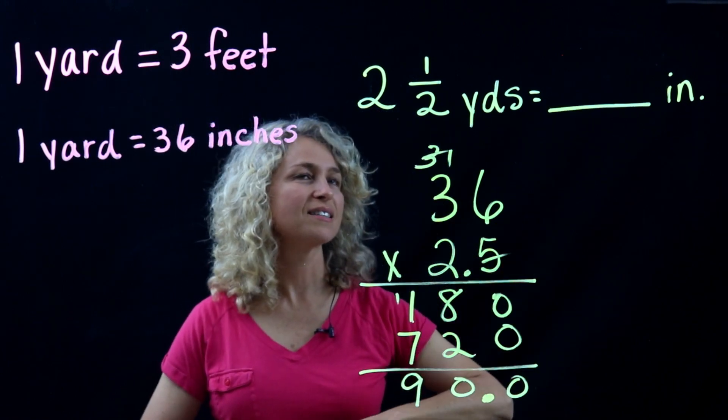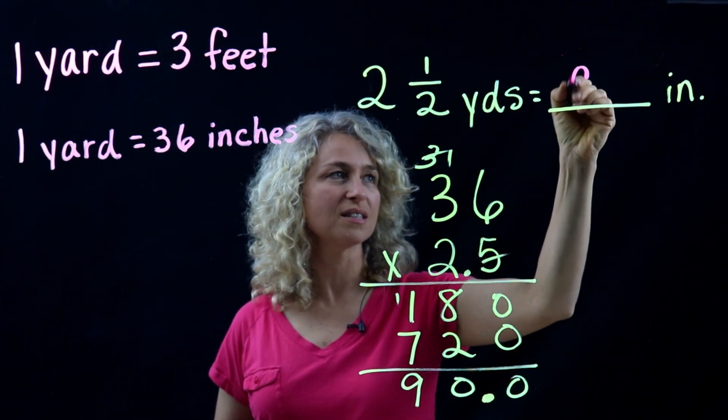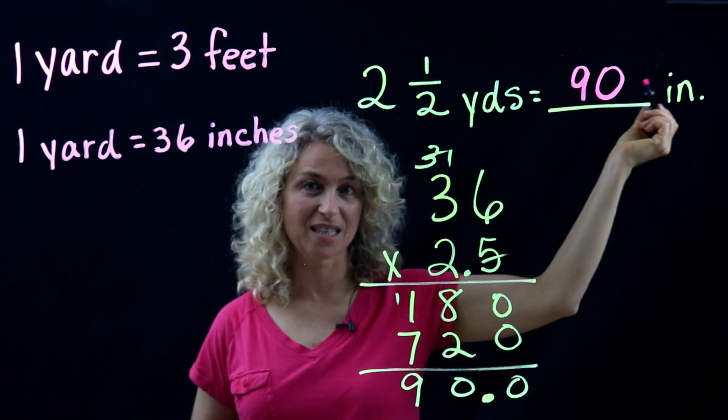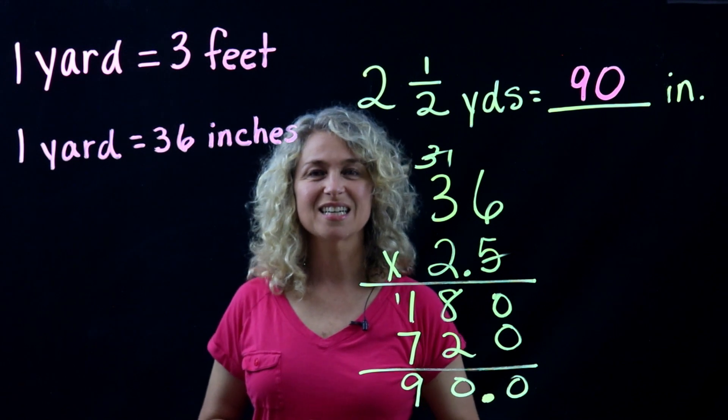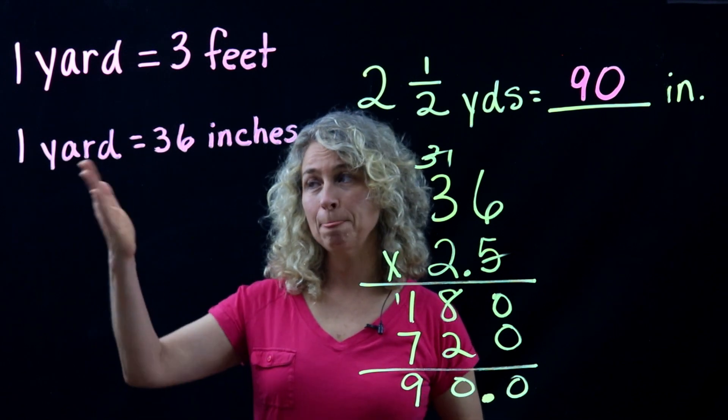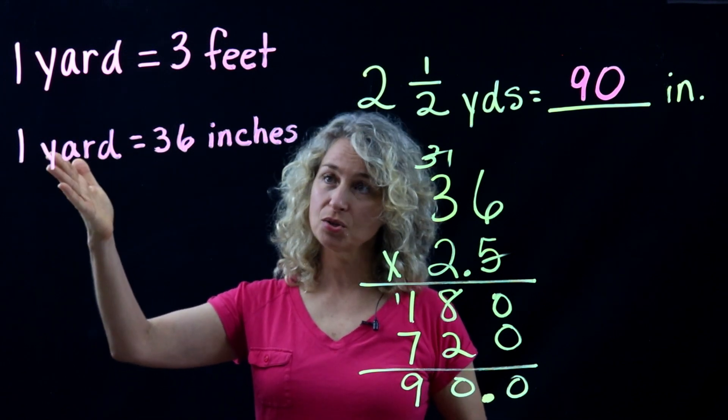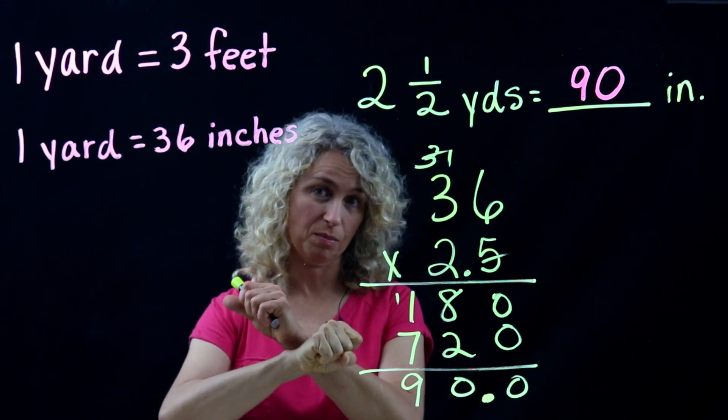So two and a half yards equals 90 inches. So when we change from units of length from a larger unit to a smaller unit, always multiply.